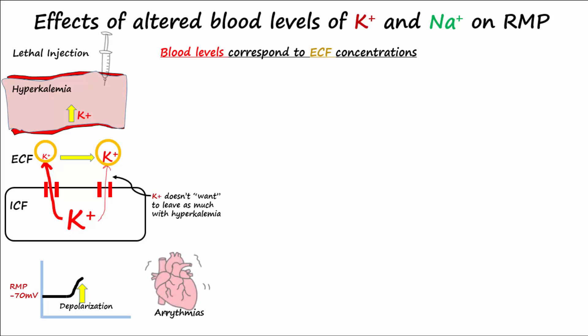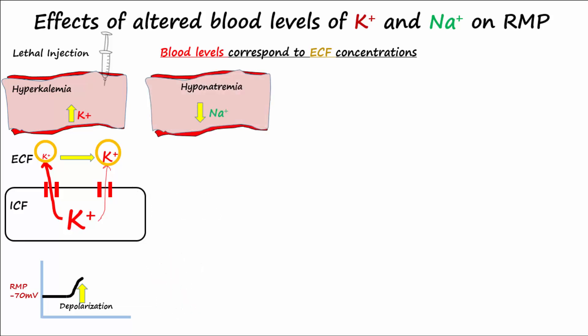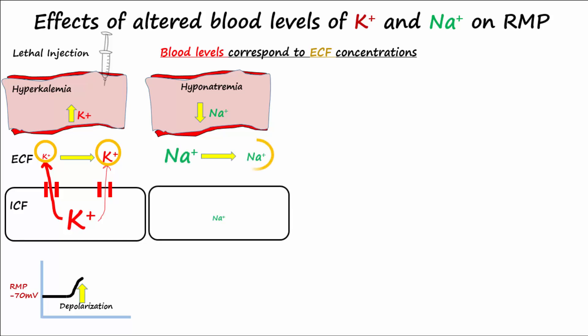Another scenario: what if sodium levels go down in the blood? This is called hyponatremia, and it would make sodium levels go down in the ECF also. How would sodium levels being lower than normal affect the RMP? Even though the gradient for sodium has decreased, remember there are little or no leak channels for sodium, so sodium cannot enter the cell — so there would be no effect on RMP.